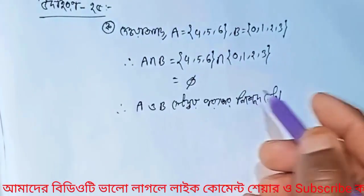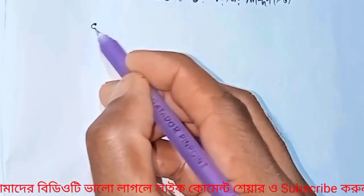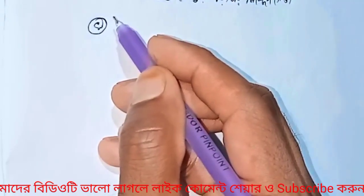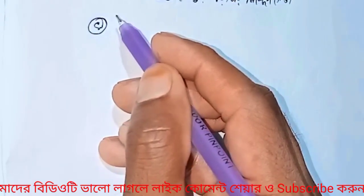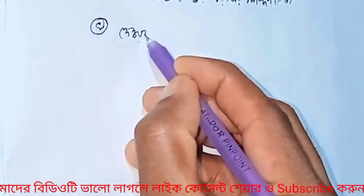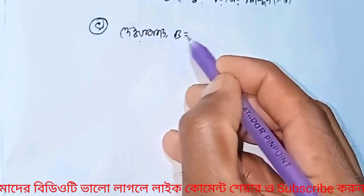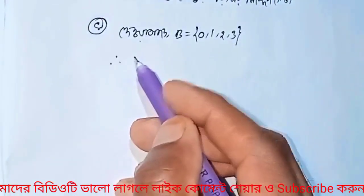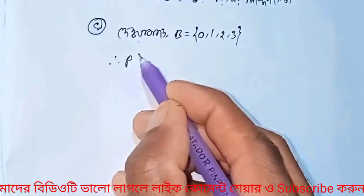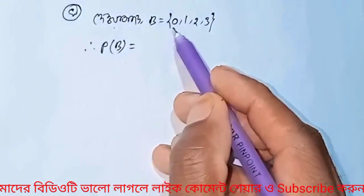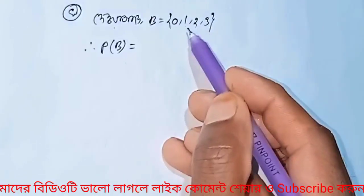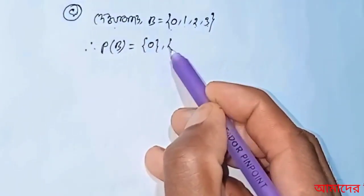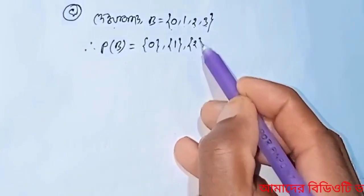Dekhan hoe. Khonambar P of B nirnae kore dekhao je P of B er upa dan sankha tuti di por n ke samorthon kore, jekhane n, B er upa dan sankha. Thale ekhane B er man devas lekto hobe. Tahle devas. B equal 0, 1, 2, 3. P ab B mane B er upa shet nirte korte hobe. Tahle P ab B. B equal {0, 1, 2, 3}. Tahle ekhane chatty mana se. Pratha me ekta lekvo. Tahle 0, 1, 2, 3.